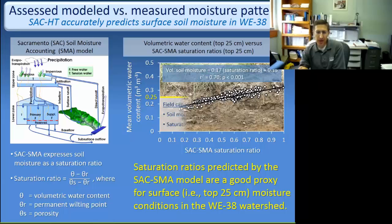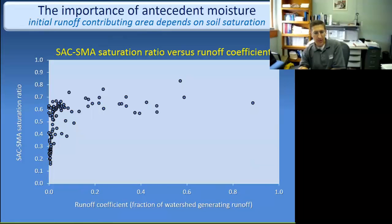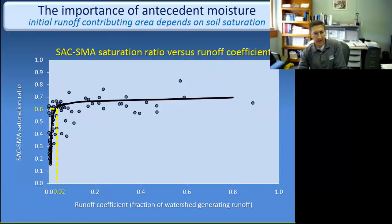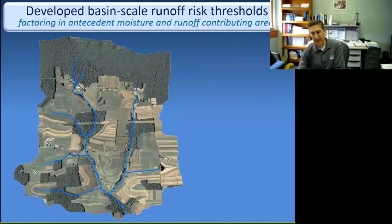One interesting thing to point out: the field capacity of soils in our experimental basin is about 0.25 or 25 percent, which corresponds to a saturation ratio of about 0.6. We took the saturation ratios from the Sacramento model and compared them against the runoff coefficient — loosely interpreted as the fraction of the watershed expected to be generating runoff. We see an interesting relationship: at a saturation ratio of 0.6 or less, only about 2 percent of the watershed is generating runoff. But anywhere above 0.6, that runoff coefficient jumps up quite a bit. Once the watershed is sufficiently saturated, a much larger fraction is generating runoff. That's how we built our basin-scale runoff risk threshold.